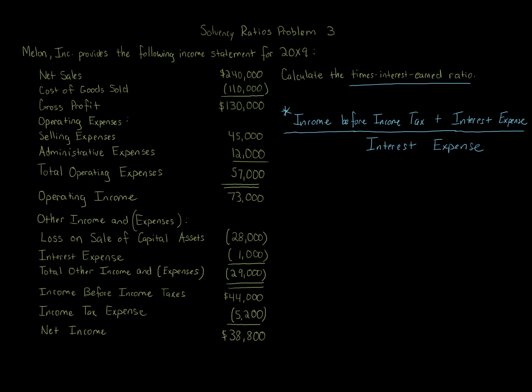Looking at our income statement for 20x9 — the times interest earned ratio, also known as the coverage ratio, measures the risk that interest payments will not be made if earnings decrease. This is a ratio that lenders look at closely, because if they are lending they want to receive their interest payments. The higher the ratio, the more likely interest payments will be paid even if earnings decrease — so higher is better from a creditor's perspective.